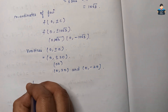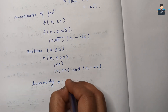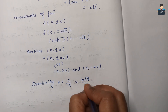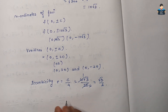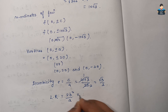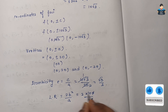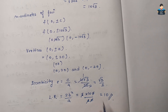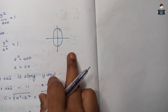Eccentricity e = c/a = 10√3 / 20 = √3/2. Latus rectum = 2b²/a = 2 × 100 / 20 = 10. For a vertical ellipse, foci are at (0, c) and (0, −c), and vertices at (0, a) and (0, −a).